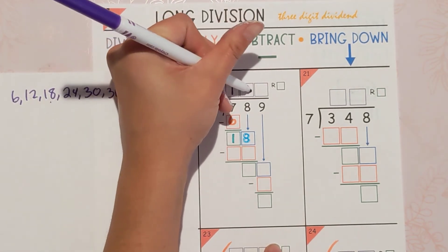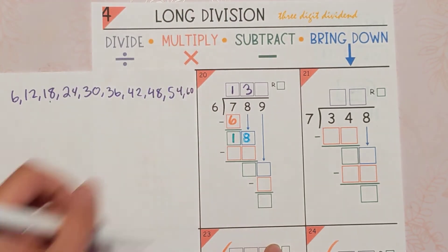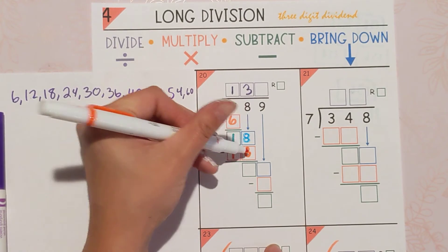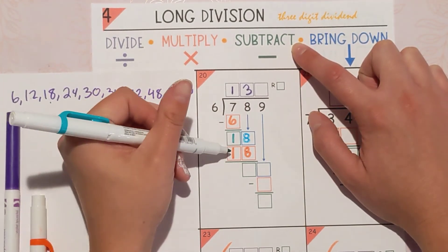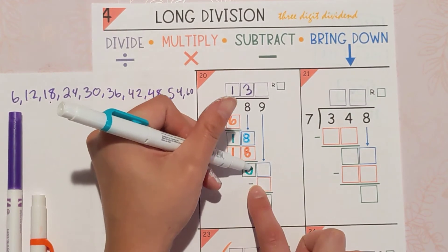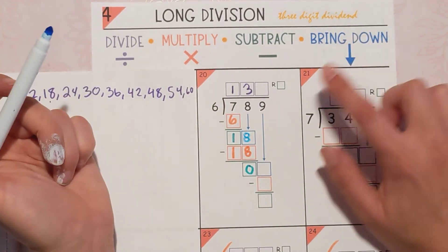Put the 3 up top. Then multiply it right back. 3 times 6 is 18. The next step is to subtract. 18 minus 18 is 0. The next step is to bring down the 9.